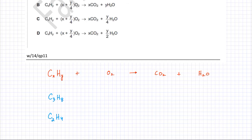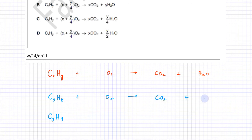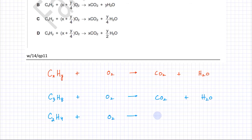C3H8 reacts with O2 and produces CO2 and H2O. All hydrocarbons have pretty much the same products for complete combustion — carbon dioxide is produced. Similarly, C2H4 reacts the same way and produces CO2 and H2O.